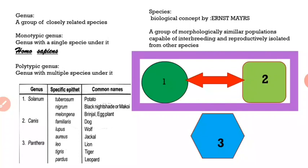Moving on to species — the biological concept of species was given by Ernst Mayr. According to Ernst Mayr, a species is a group of morphologically similar populations capable of interbreeding and reproductively isolated from other species. That is, species represents populations with similar morphology, capable of interbreeding and producing fertile offspring. However, a population belonging to one species is reproductively isolated from populations belonging to other species, resulting in no offspring or sterile offspring.